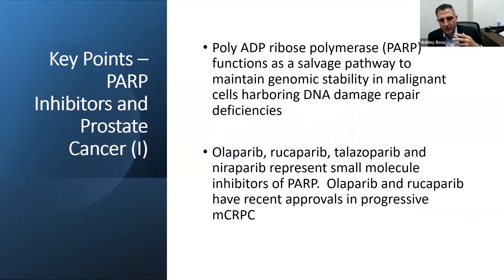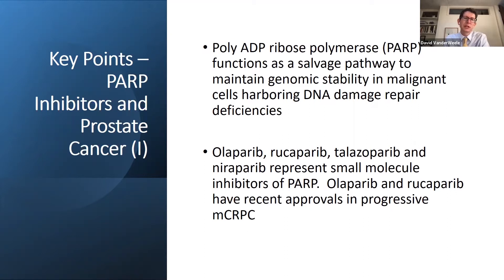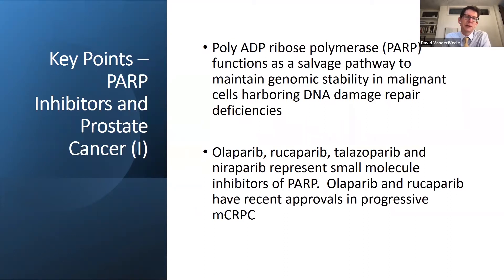Dr. Vanderweel, can you expand upon homologous recombination and where PARP and PARP inhibitors fit in? PARP is an alternate pathway to help with DNA repair, working in the background. But if you have deficiency in homologous recombination because you've lost the function of a gene like BRCA2, then PARP becomes especially important — it's the backup pathway that kicks in when there is DNA damage that needs to be repaired. Folks with mutations in BRCA2 and these other genes are especially sensitive to PARP inhibition. If PARP inhibitors block PARP, you increase the DNA damage to an extent that the cell cannot recover from.